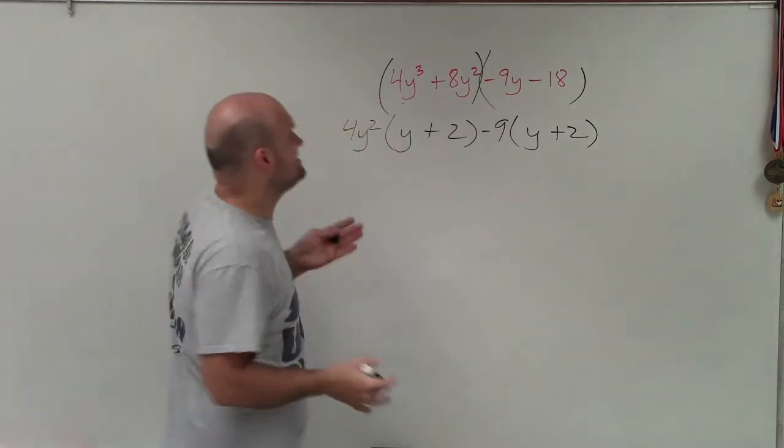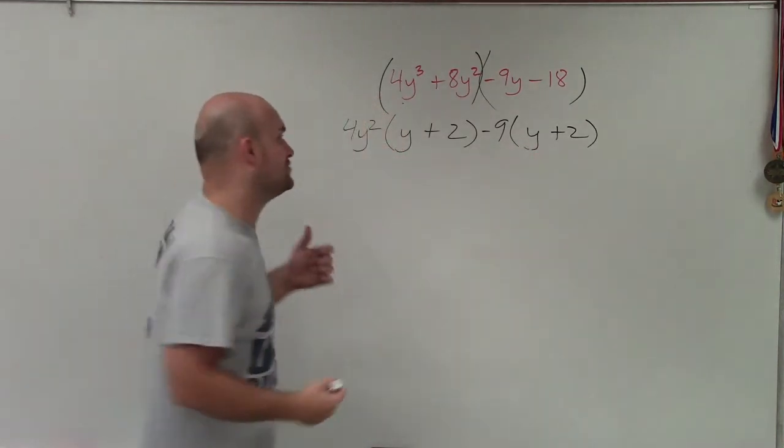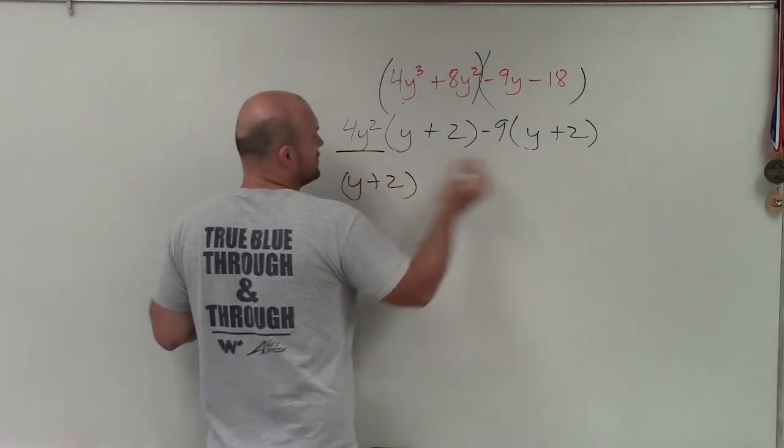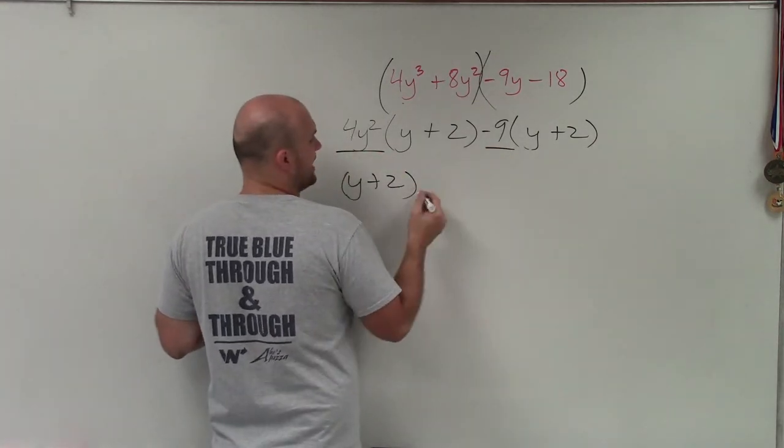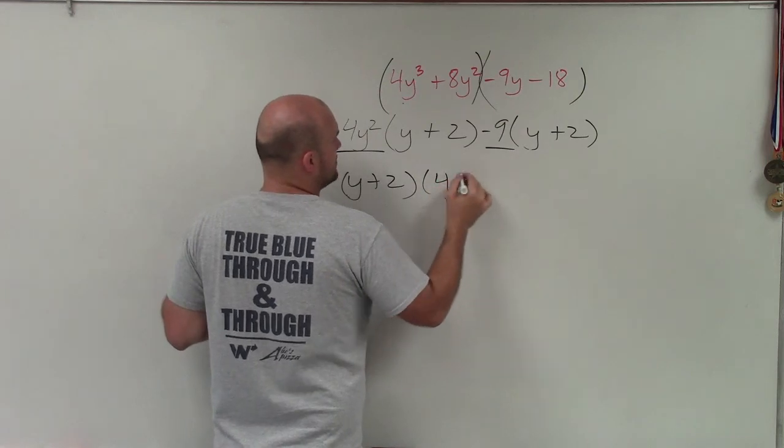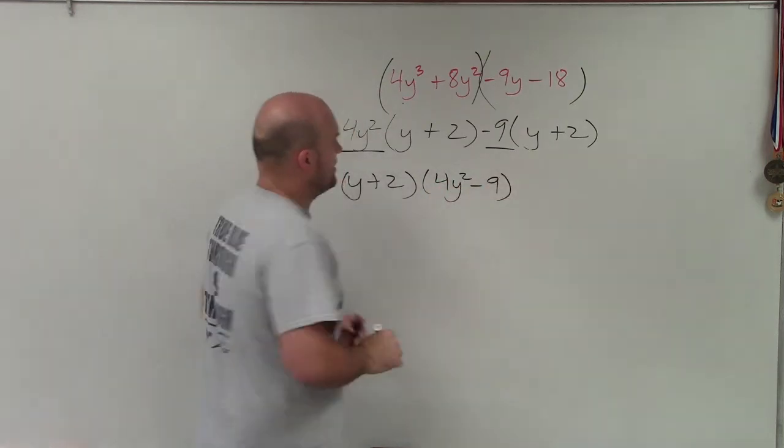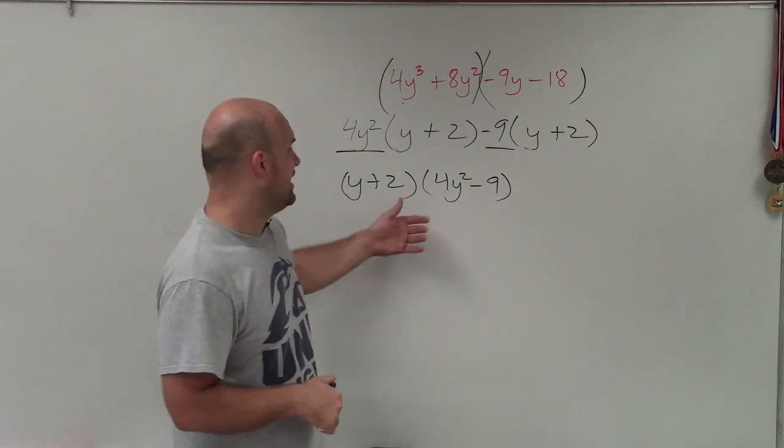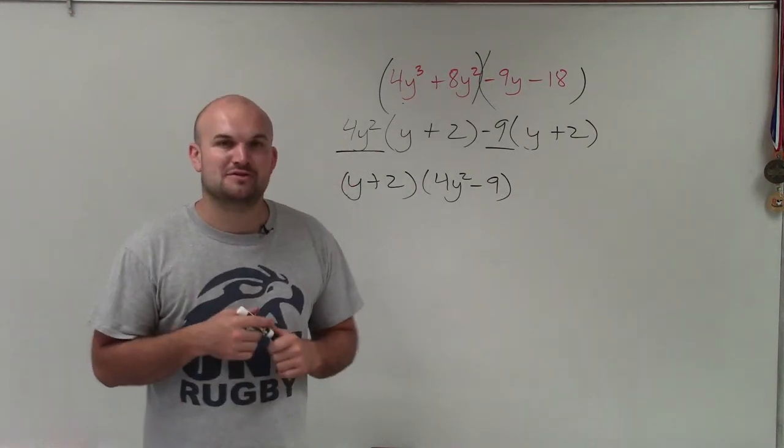Now you see that inside the parentheses, I have the exact same expression. So I'm going to factor y plus 2 out. And what I have left over is 4y squared and negative 9, which I'll write as its own. And there you go, ladies and gentlemen. I have now taken this polynomial, and by factoring by grouping, I have written it as a product of its factors. Thanks.